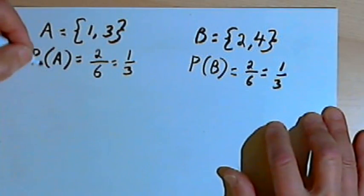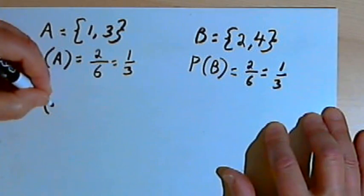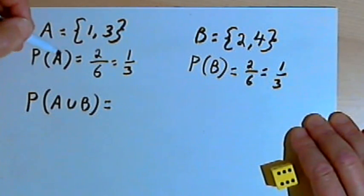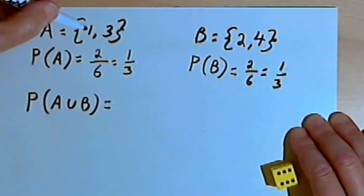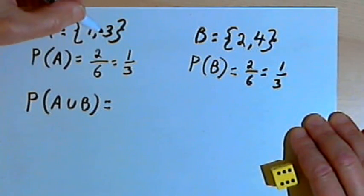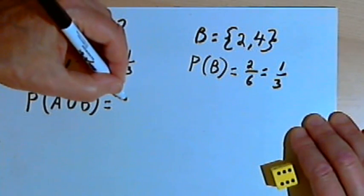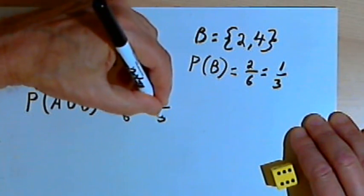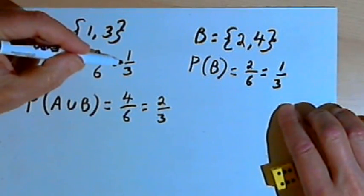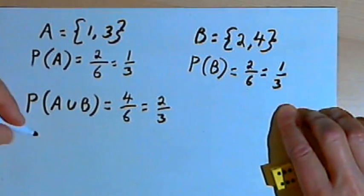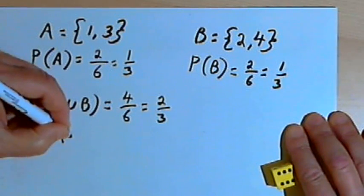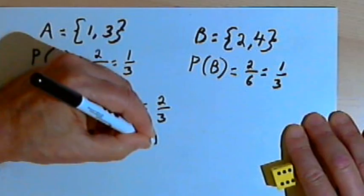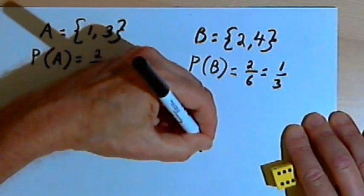Now if I want to find the probability of either A or B happening, I can think of that as the probability of A union B. The probability of A union B means I've got to get either a 1 or a 3, or a 2 or a 4. There are four different ways this could happen — 1, 3, 2, and 4 — so the probability would be 4 over 6, which reduces to 2 thirds. Notice that's just the same as the probability of A plus the probability of B. So the general formula is: the probability of A union B equals the probability of A plus the probability of B.